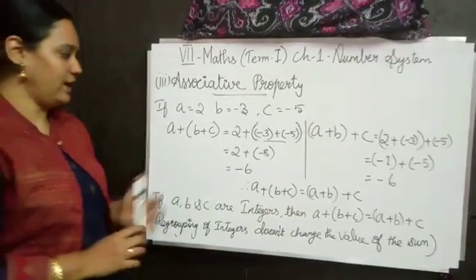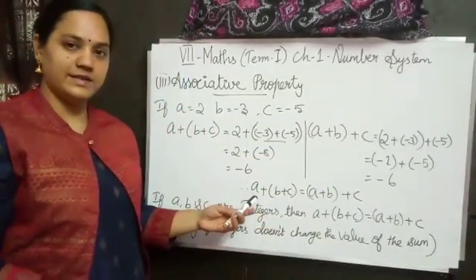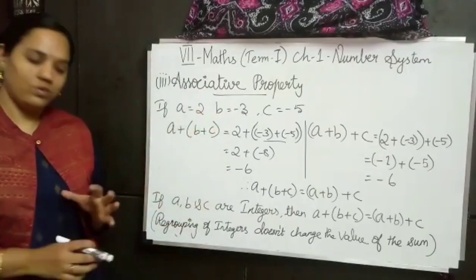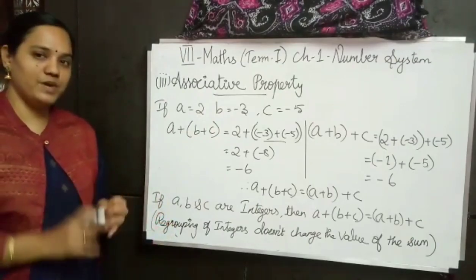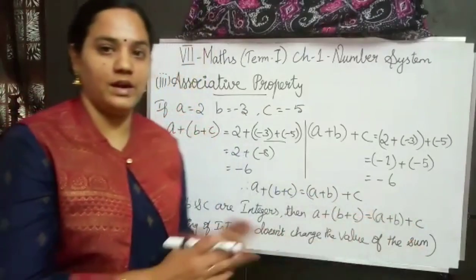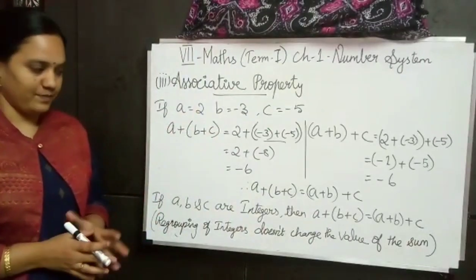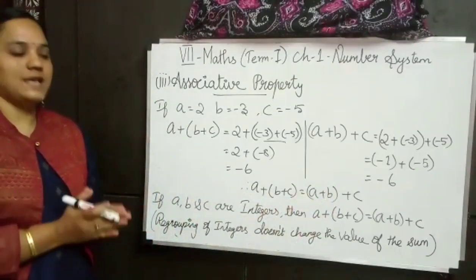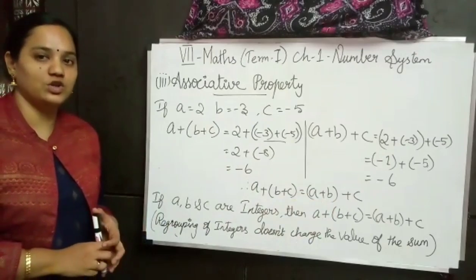Shall we compare these two now? The value of a plus (b plus c) is minus 6, and the value of (a plus b) plus c is also minus 6. So finally the result is: a plus (b plus c) is equal to (a plus b) plus c. Regrouping — this property says that regrouping of integers does not change the value of the sum. Here we grouped b and c together, but here we grouped a and b together, and the sum value is same for both sides. So we can say that associative property satisfies addition of integers.